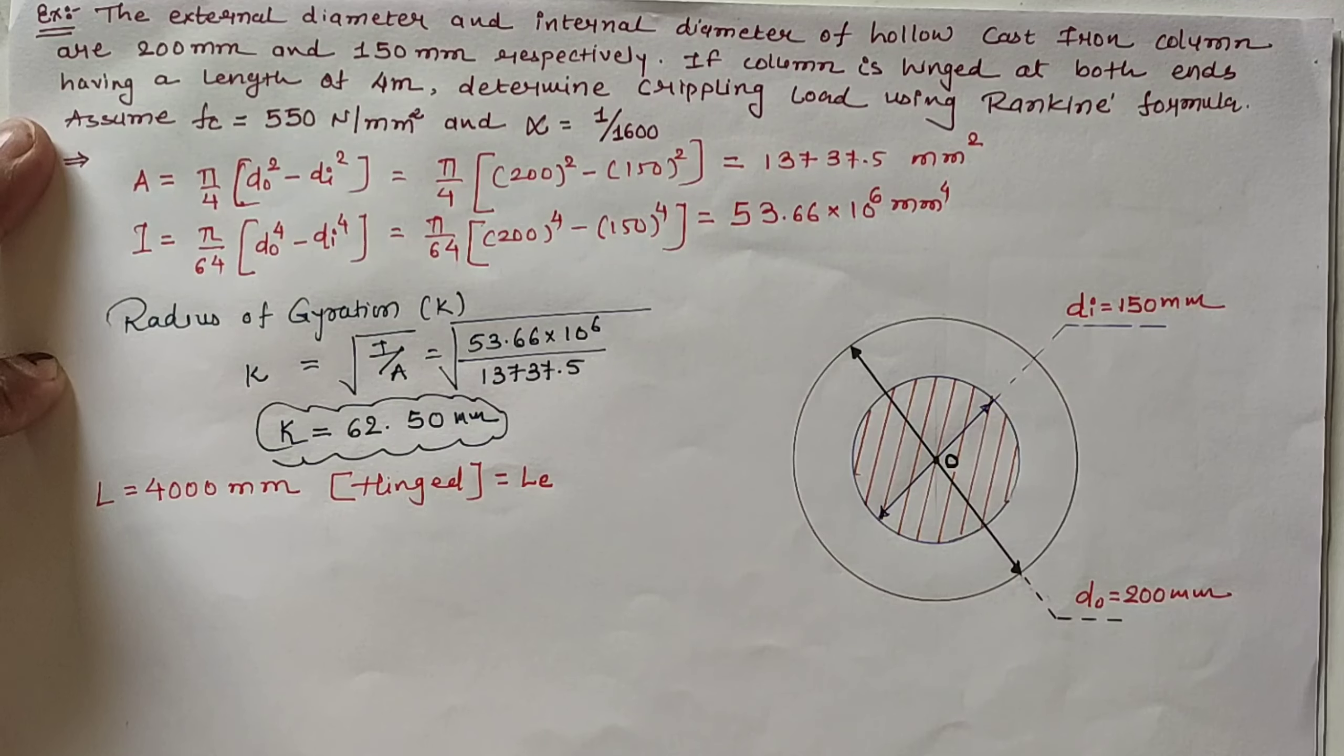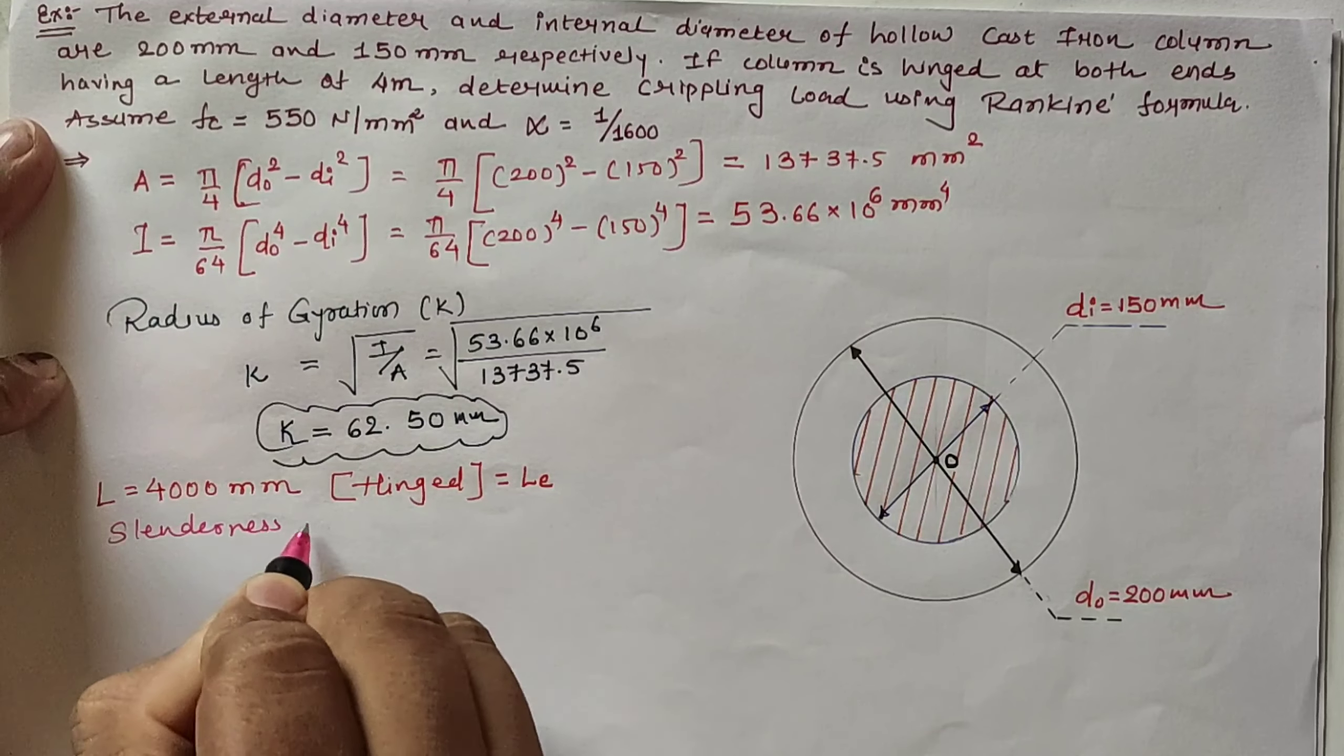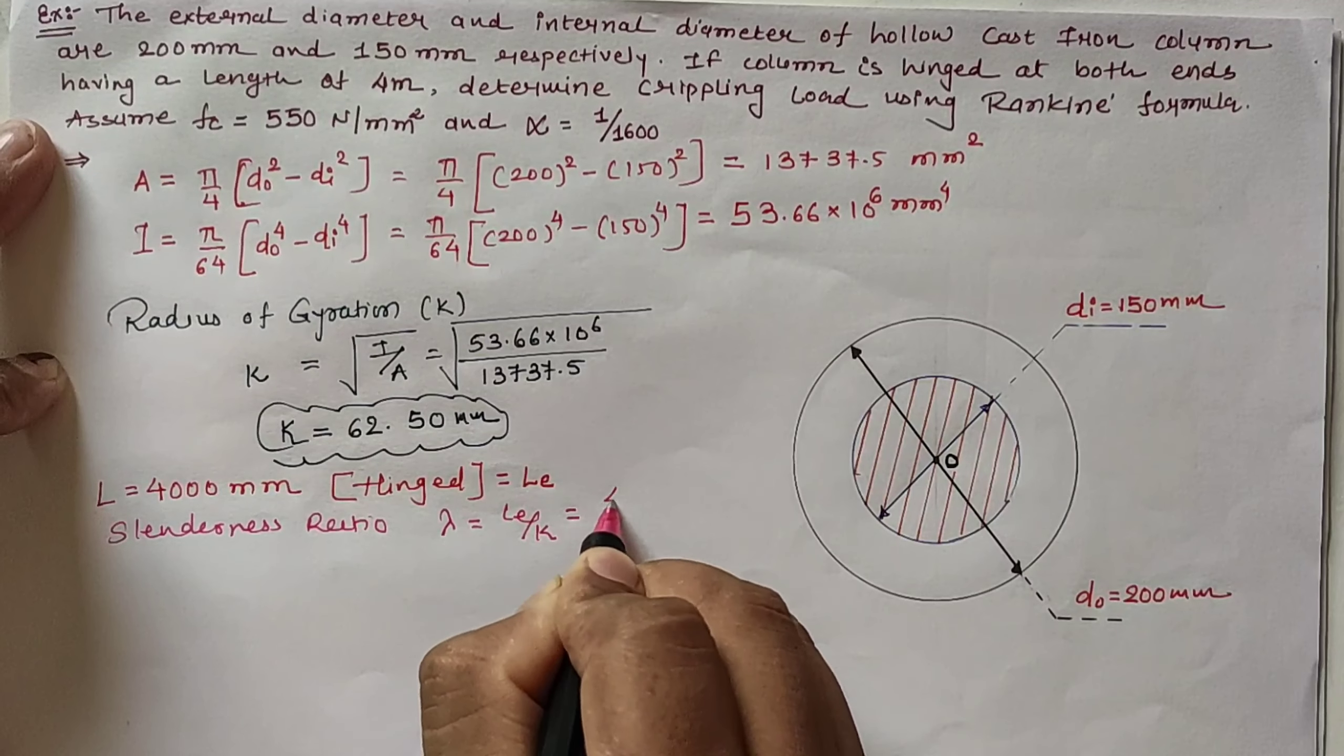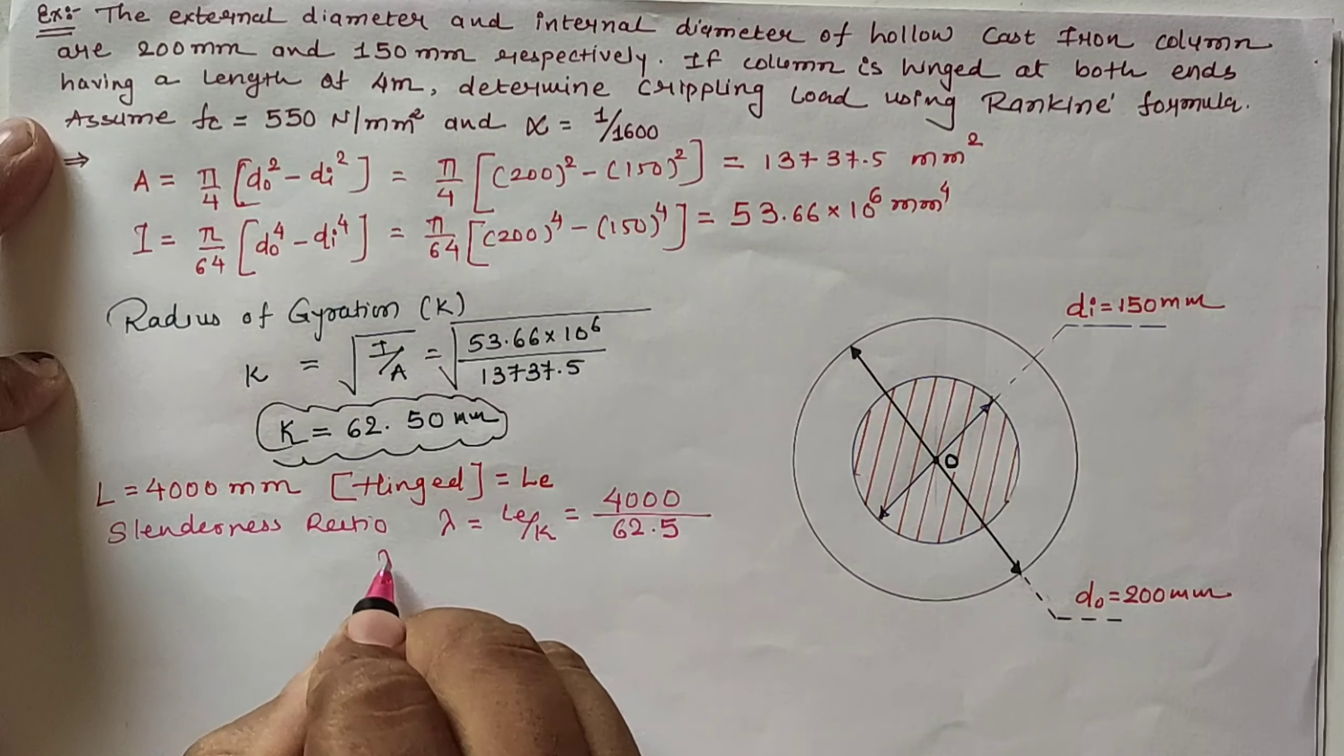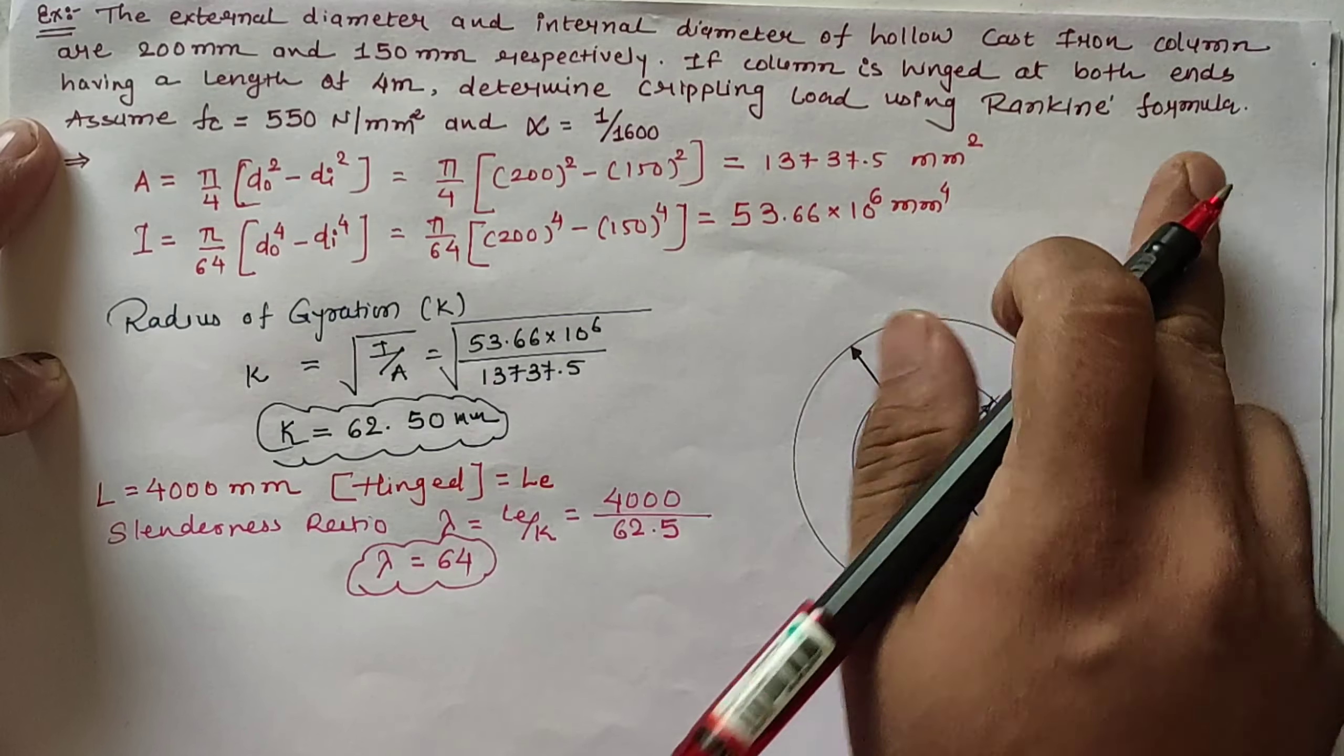For this effective length, slenderness ratio λ = Le/k = 4000/62.5 = 64. We now calculate the crippling load using Rankine formula.